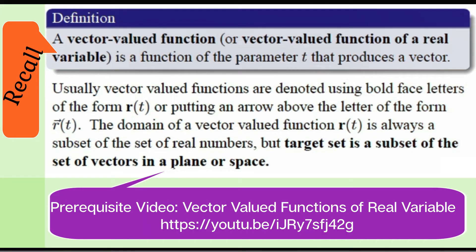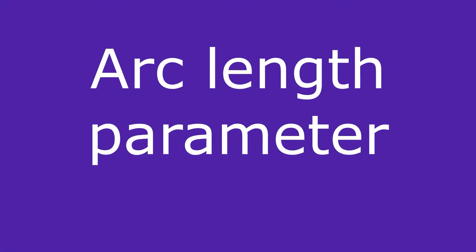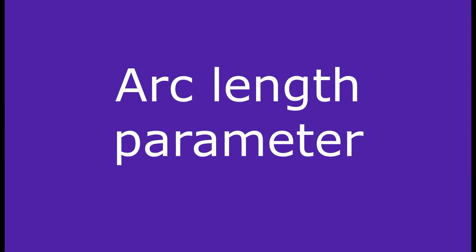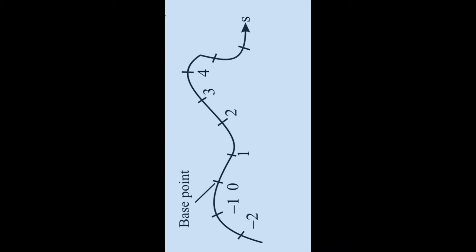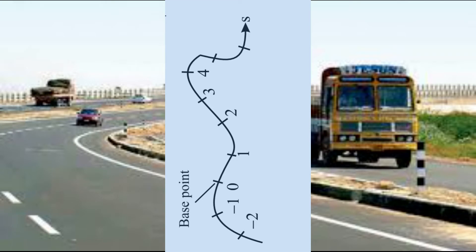While discussing vector valued functions so far we have seen that the parameter used was time t or theta the angle, but in certain situations it will be good if we use another parameter. That parameter is the arc length parameter, which we are going to discuss in this session. Here you can see a curve with measurements zero, one, two, three, four on top and negative one, negative two on the bottom. You can imagine this curve as a highway.